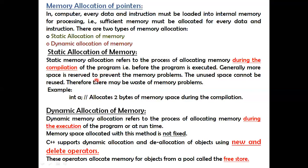Generally, more space is reserved to prevent memory problems. The unused space cannot be reused in static allocation. For example, if you declare int a[100], you reserve locations a[0] to a[99], but if you use only the first ten locations — a[0] to a[9] — the rest are still empty and that memory cannot be reused.